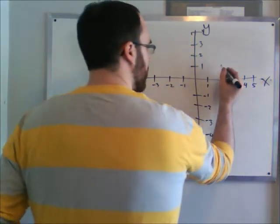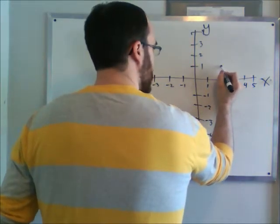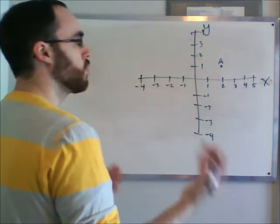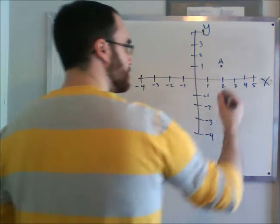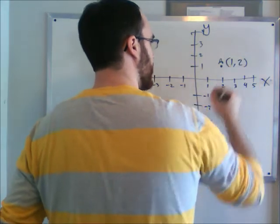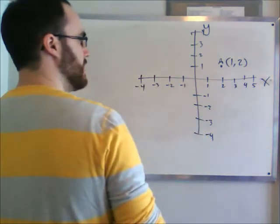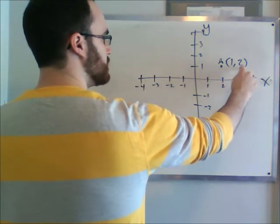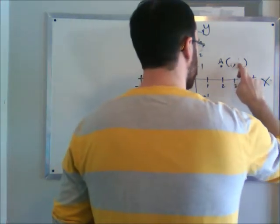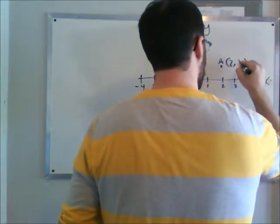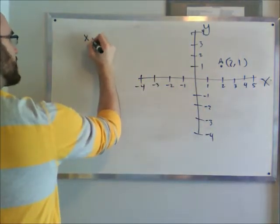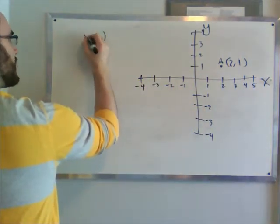Let's say we pick a point here — we're going to call this point A. And that A has coordinates on it, which is written in circle brackets. That's actually two comma one, because it goes x comma y. So any coordinates are going to be x comma y, like that.